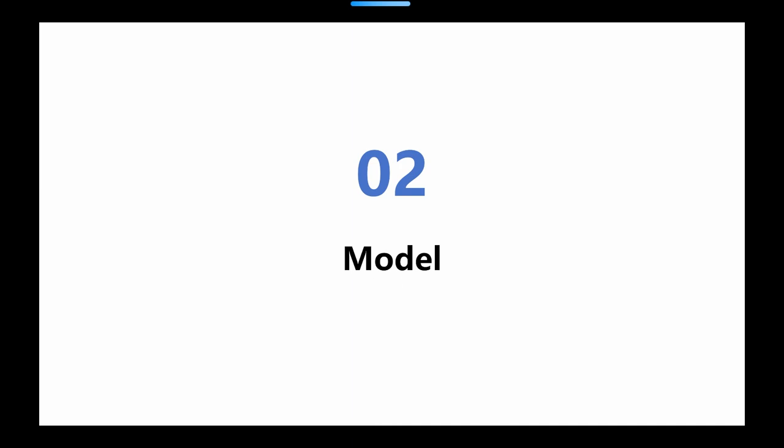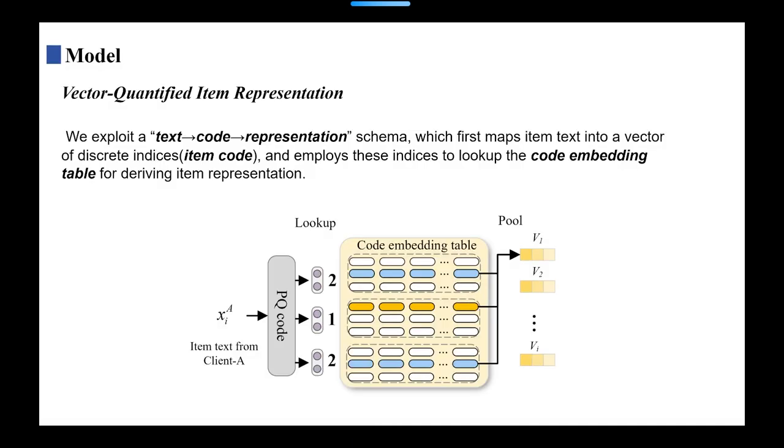Next, I will introduce our model. We exploit a text-to-code representation schema, which first maps item texts into a vector of discrete indices, and employs these indices to look up the code embedding table for deriving item representation.